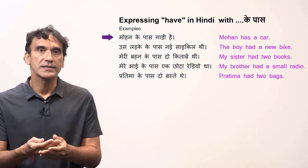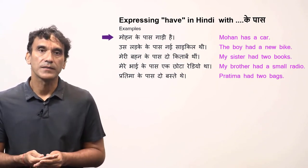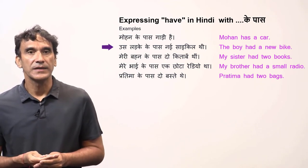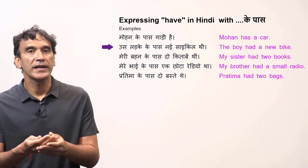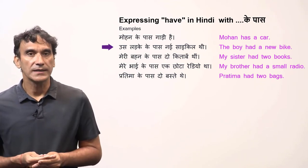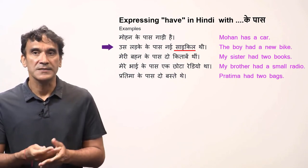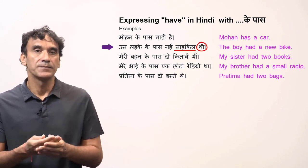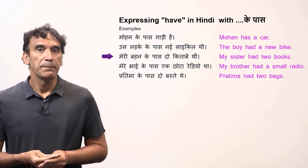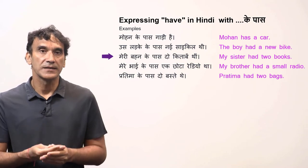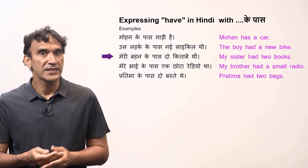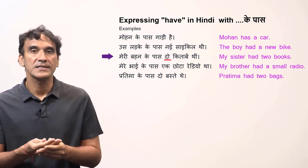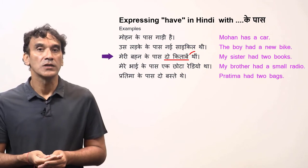Mohan has a car. 'Us ladke ke paas nai cycle thi' — the boy had a new bike. 'Cycle' is feminine and it is past tense, so the verb is 'thi.' My sister had two books — again it is past tense with a feminine plural subject, so the verb is 'thin.'